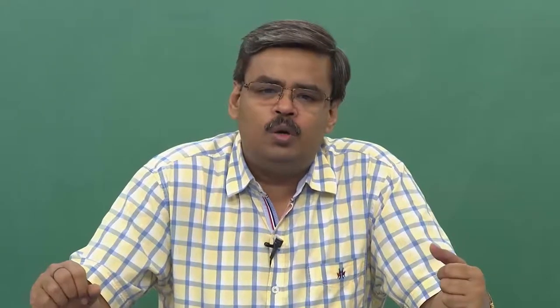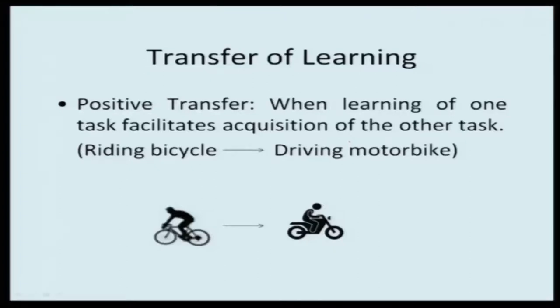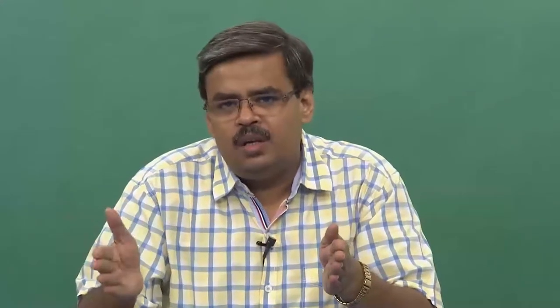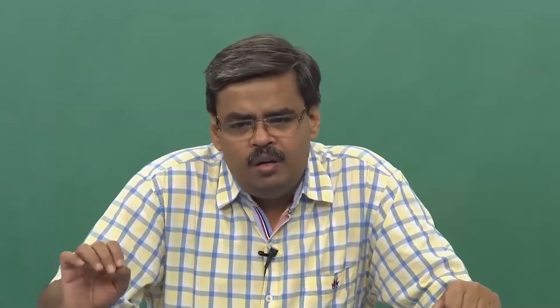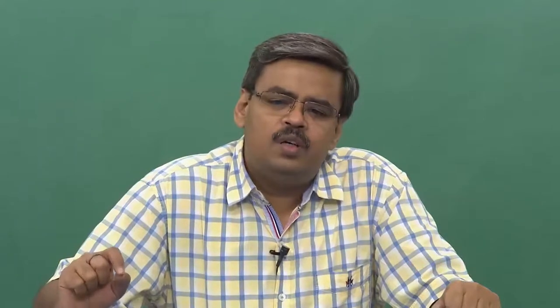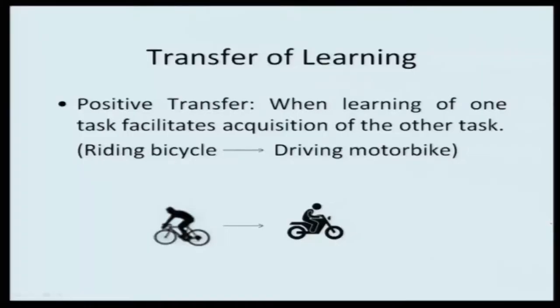Now let us talk about transfer of learning — is it that learning one thing helps us learn another thing? Does what we learn first have any influence on what we learn later? The previously learned thing can have a facilitatory role, an inhibitory role, or perhaps no role at all on incoming learning. That is what is called transfer of learning. There are three possibilities. Positive transfer occurs when acquiring a first skill helps you learn a second set of tasks.